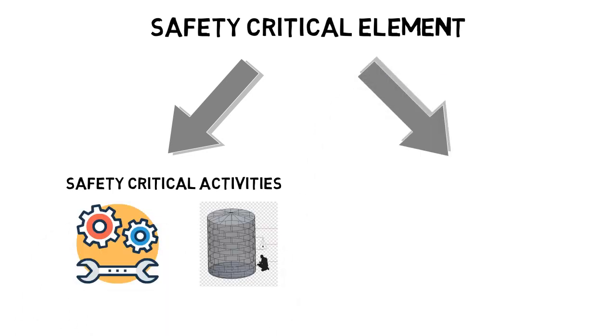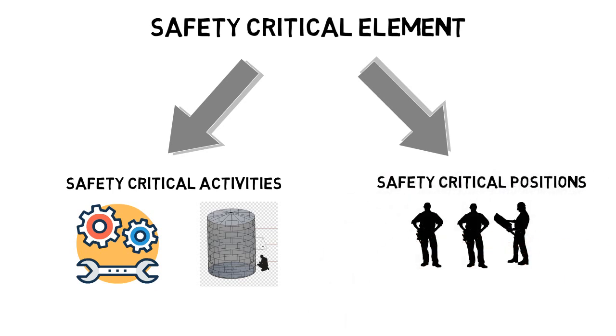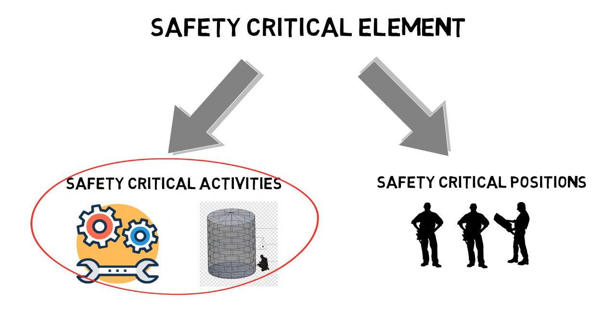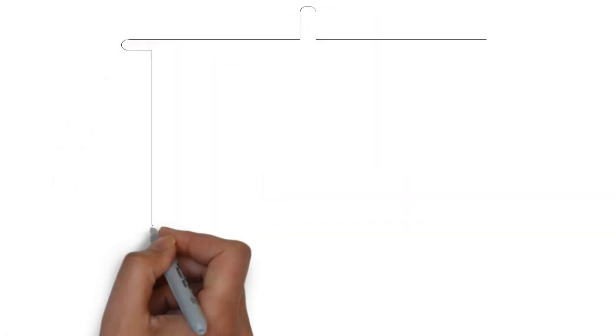Besides, we identify the safety critical positions responsible for ensuring the effectiveness of those critical elements. The risk analysis studies that can be used to identify the major accident hazards and safety critical barriers may vary depending on the nature and size of the installation. However, EGPC has identified specific studies for these purposes.